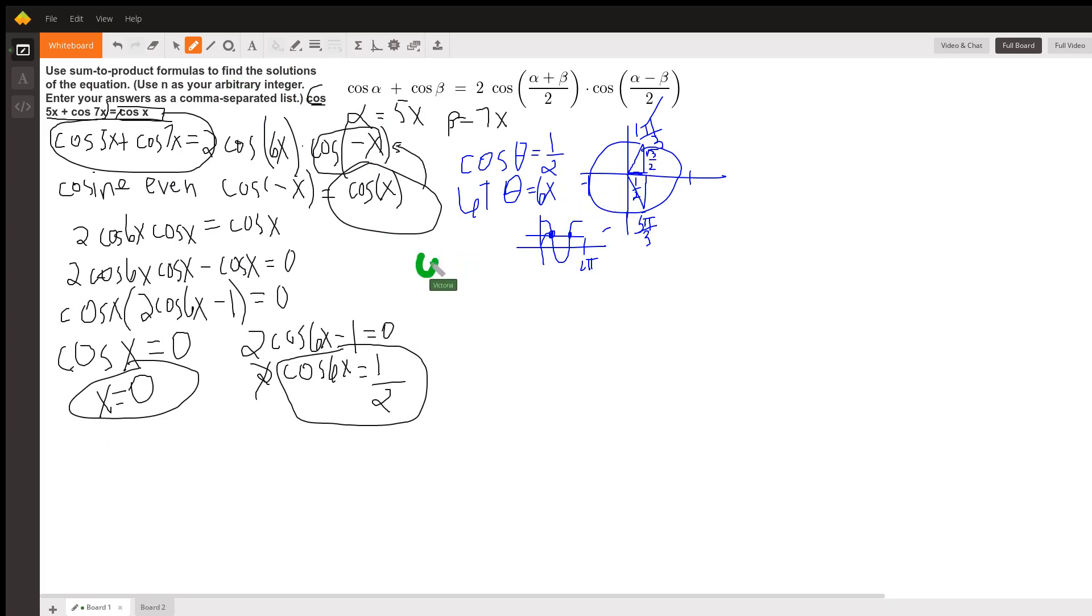We know that theta has to equal pi over 3. Or you could go around the loop as many times as you wanted by adding 2 pi n to it, where n is our arbitrary integer. Or theta is 5 pi over 3. And if you want to go around more than once, you would add 2 pi n to it.